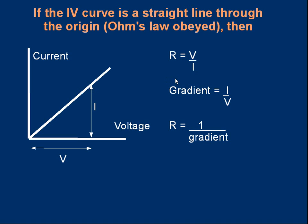The gradient of this straight line through the origin is rise divided by run. In this case the rise is I and the run is V, so the gradient is I over V. Resistance is V over I and the gradient is I over V, so the resistance is simply the reciprocal of the gradient: R equals one over the gradient.